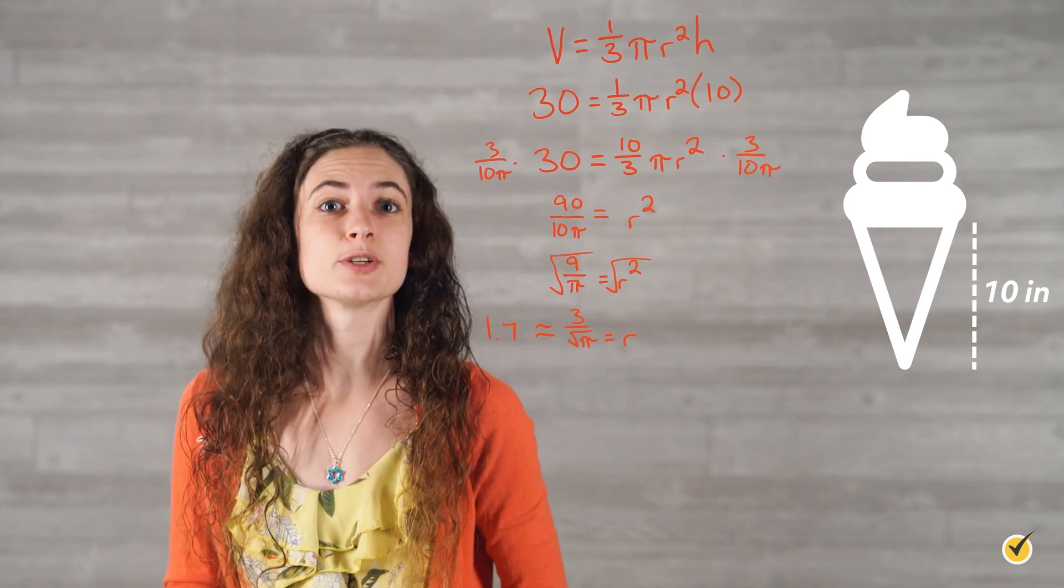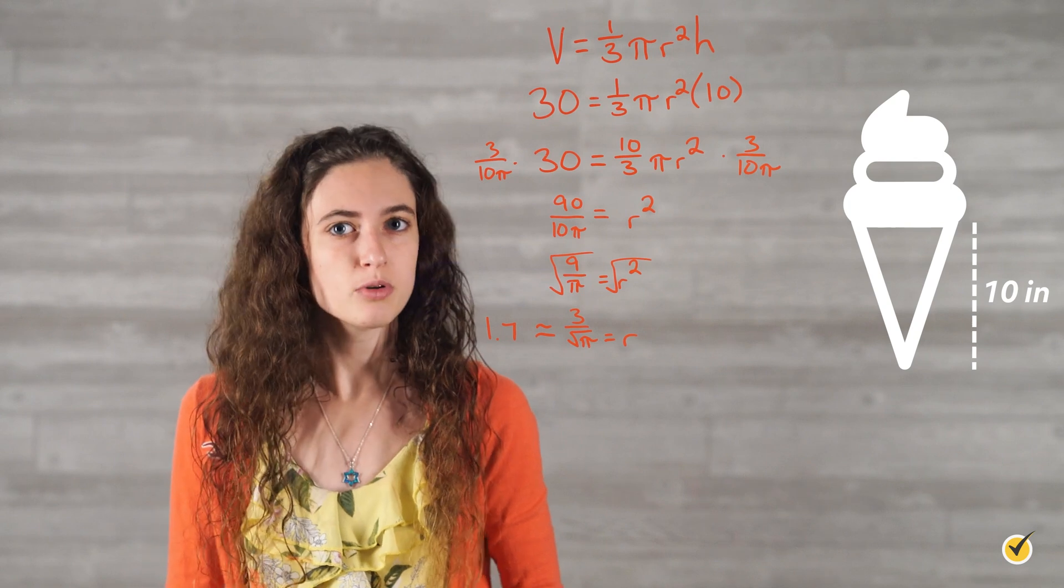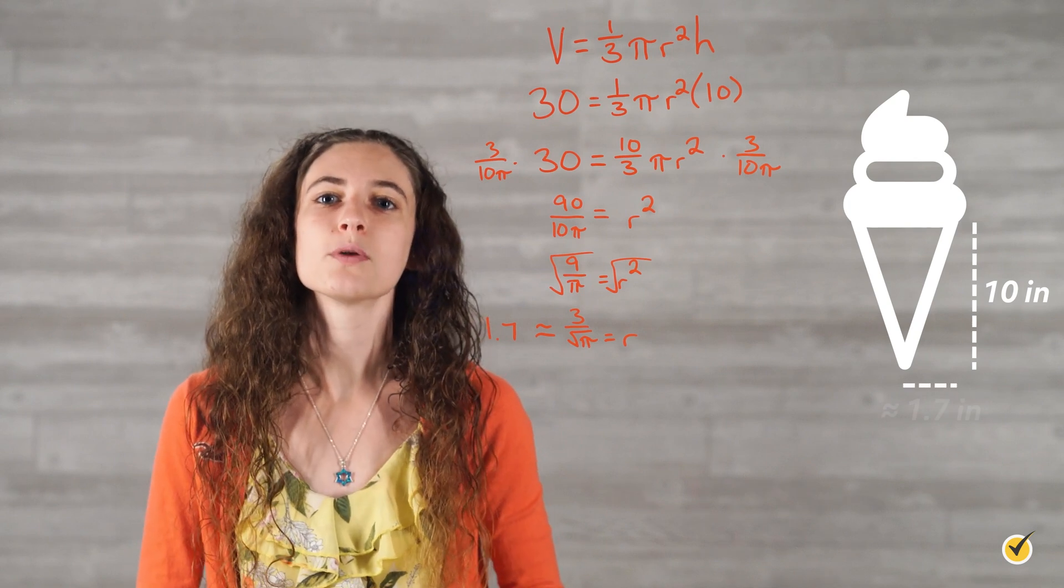In fact, since the linear dimensions of the cone are measured in inches, we know that r is approximately 1.7 inches.